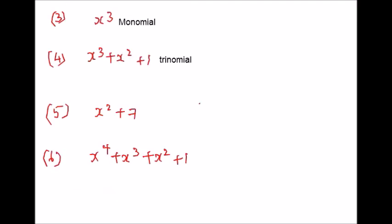Now let's move on to question number five. Please count the terms. We have just two terms — a variable and a constant. These two monomials are connected by plus or a negative sign. So this is a binomial. Bi means two. So if we get an expression with two terms, we say that this is a binomial.